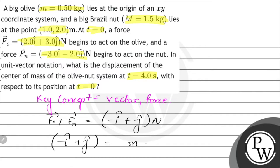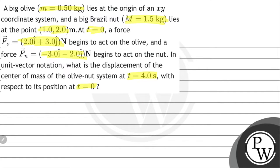So we get the value of center of mass acceleration. a of center of mass equals minus 1/2 i cap plus 1/2 j cap in meter per second squared.